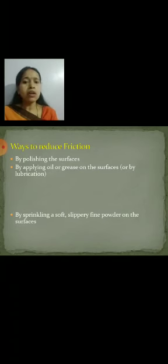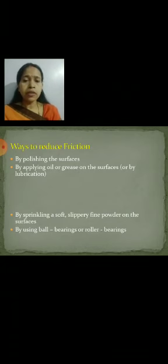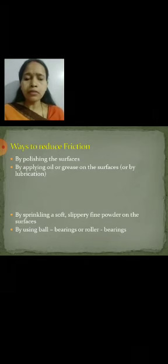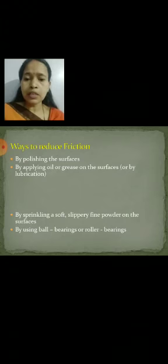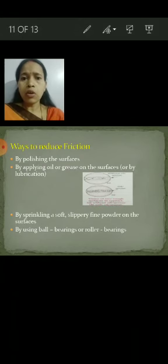Also by sprinkling a soft, slippery fine powder on the surfaces. During the playing of carrom, we sprinkle powder on the carrom board to reduce friction so the striker moves properly. And by using ball bearings or roller bearings. When you apply oil on rough surfaces it covers that area, resulting in less friction.